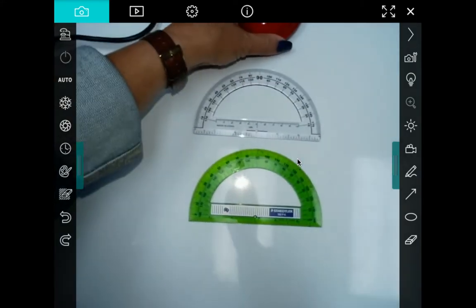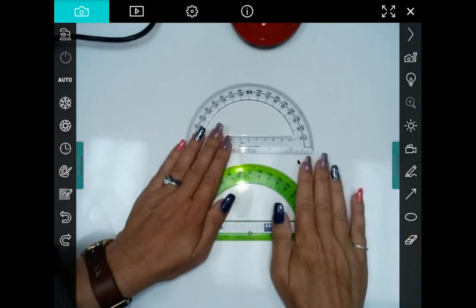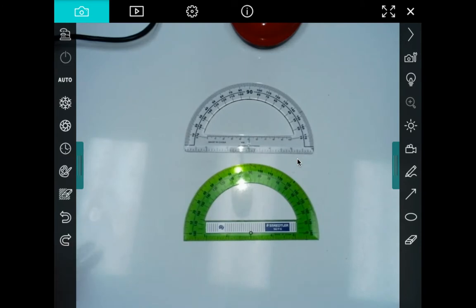Well, that's totally crooked. There we go. Okay, it's a measuring tool similar to a ruler. It's called a protractor.